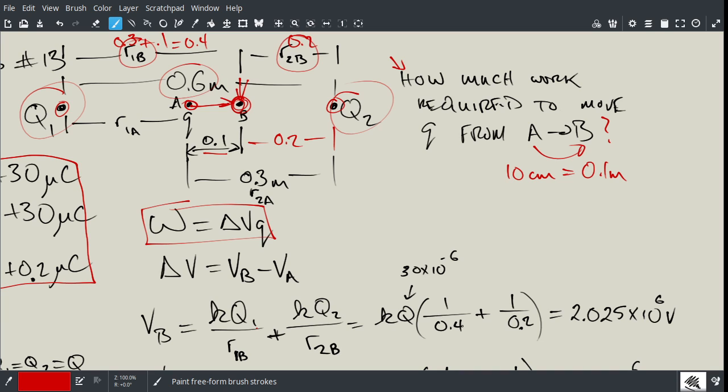That's what I have here. If you look, R1B is 0.4 there, and R2B is 0.2 there.